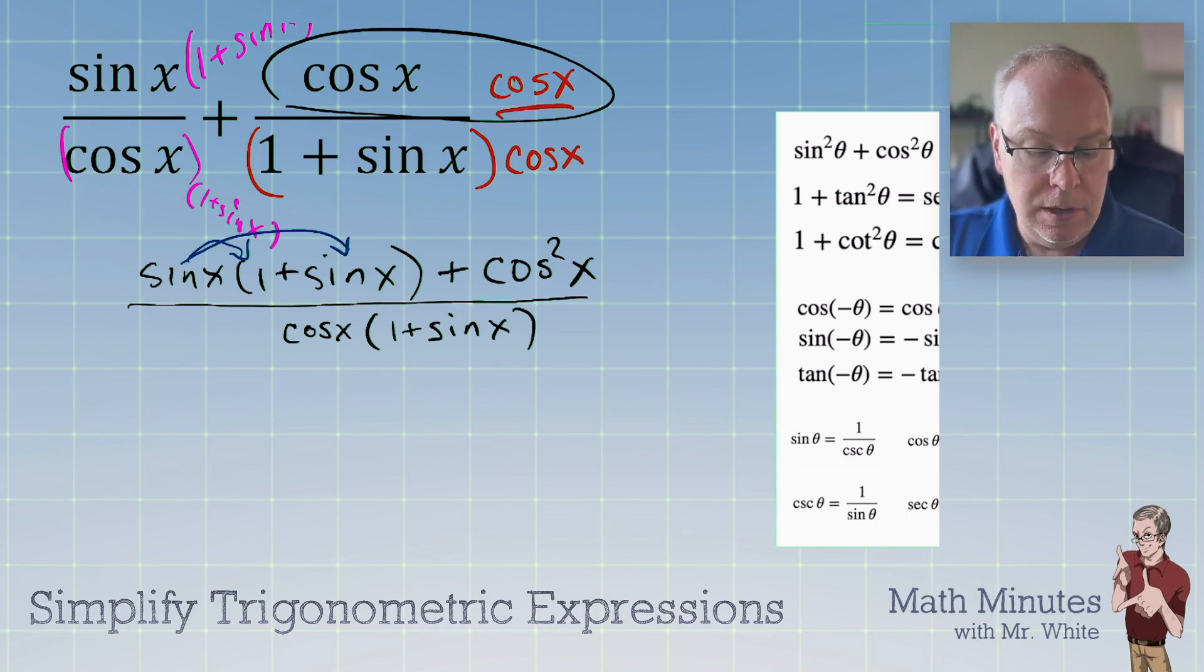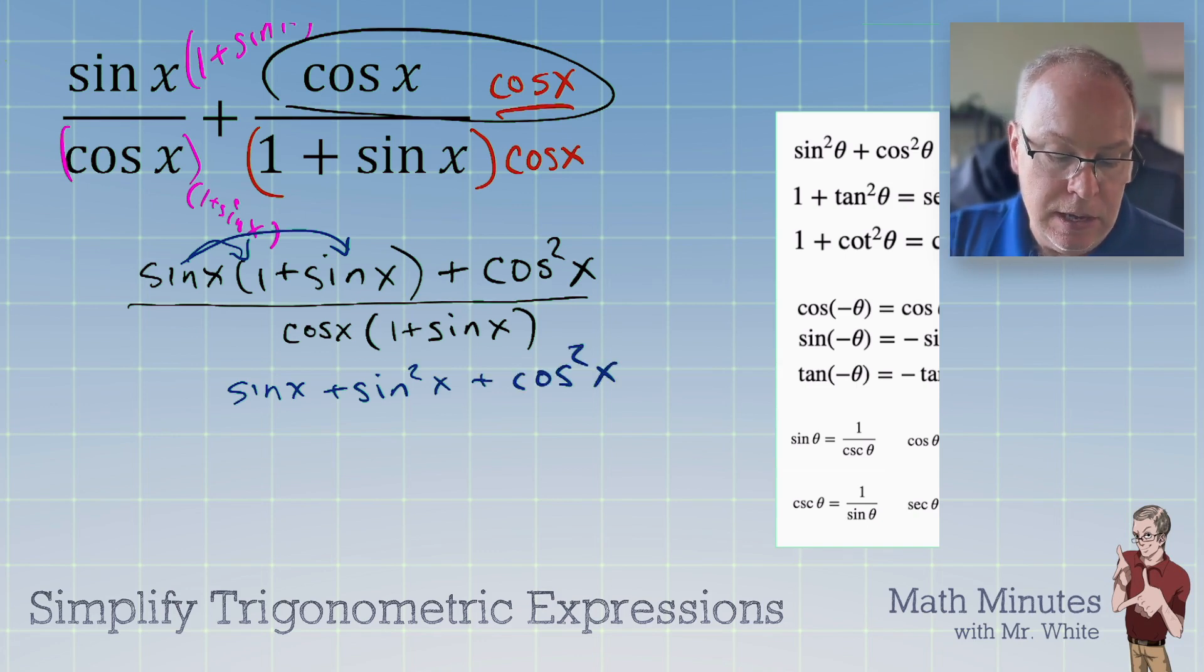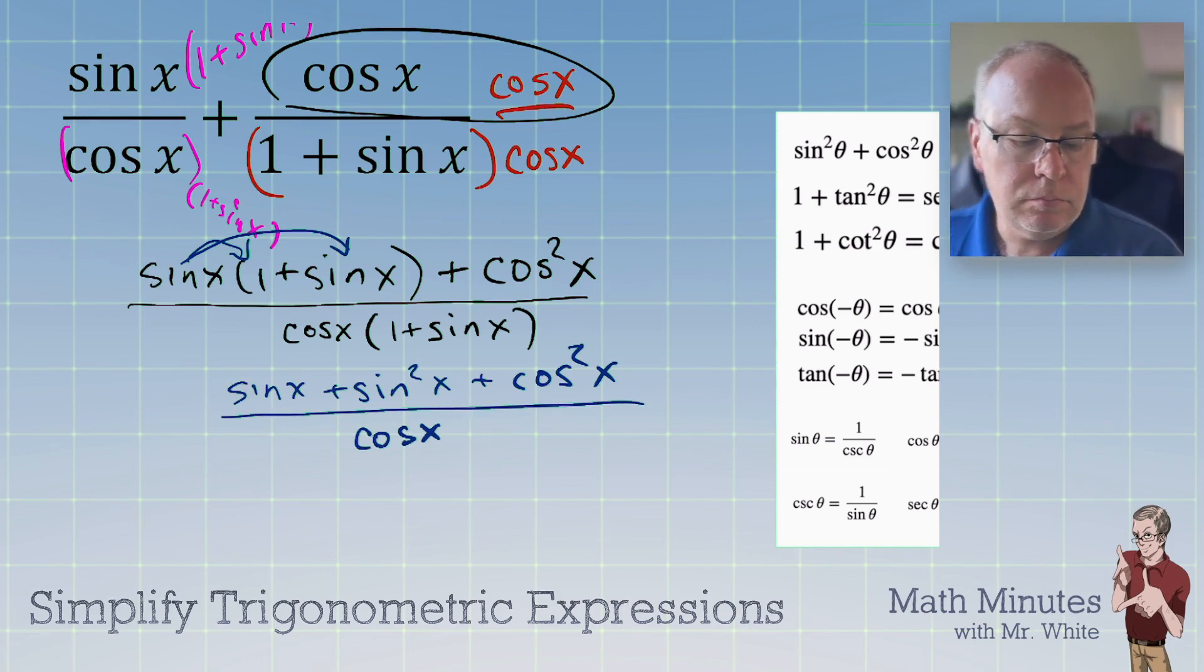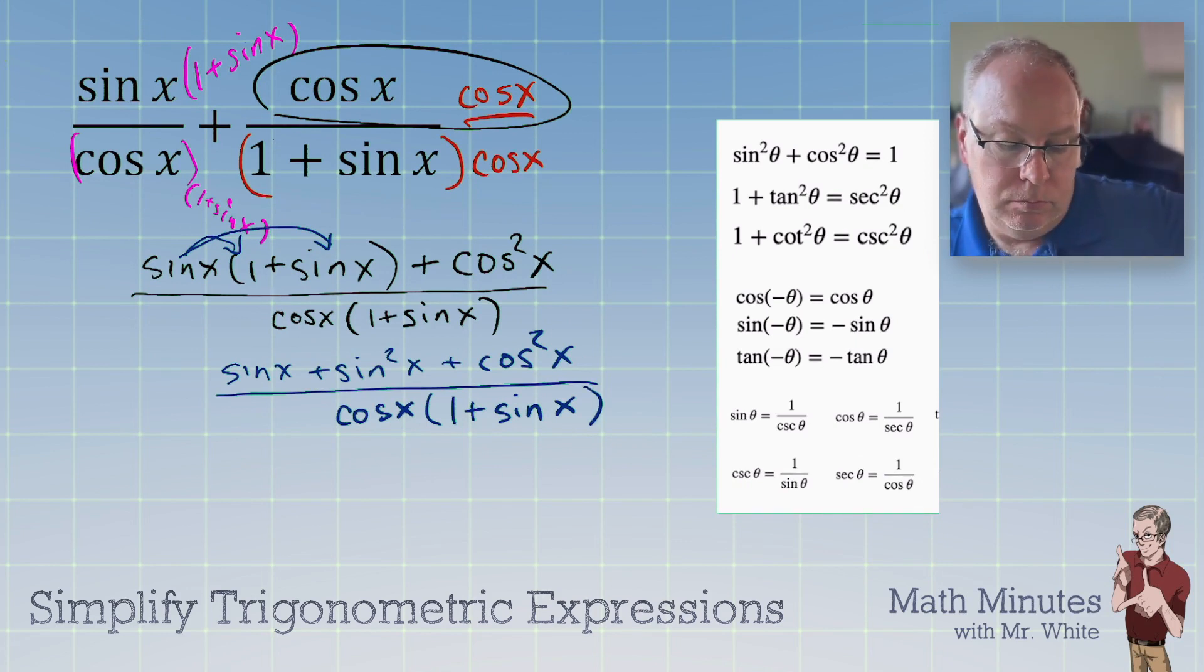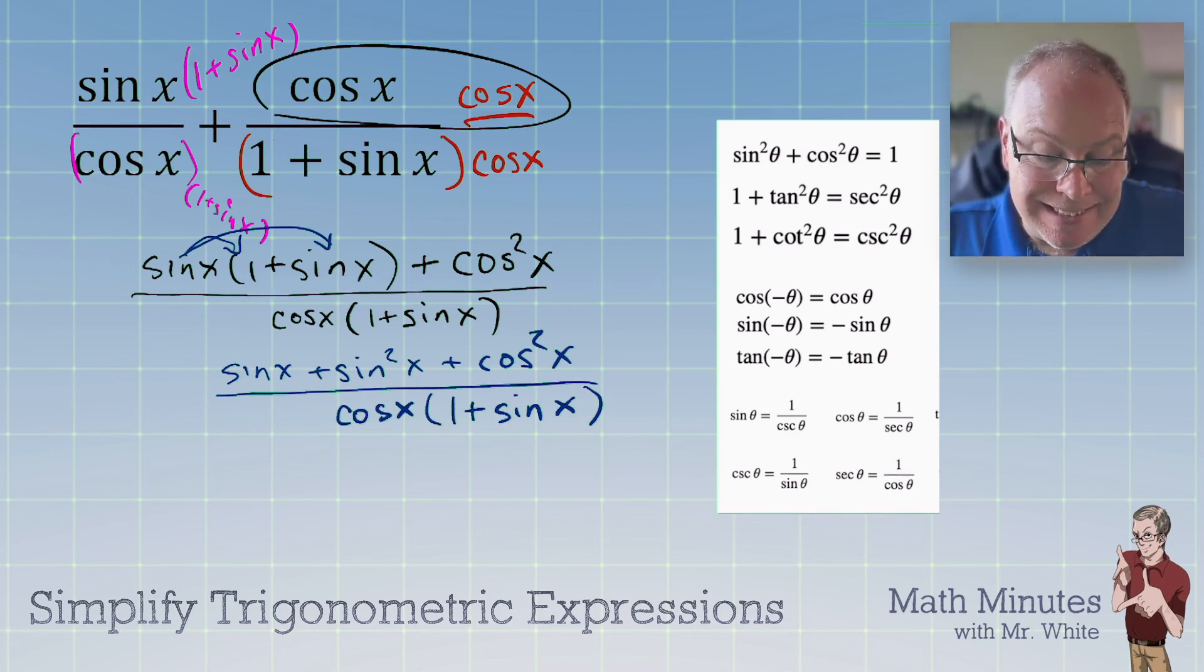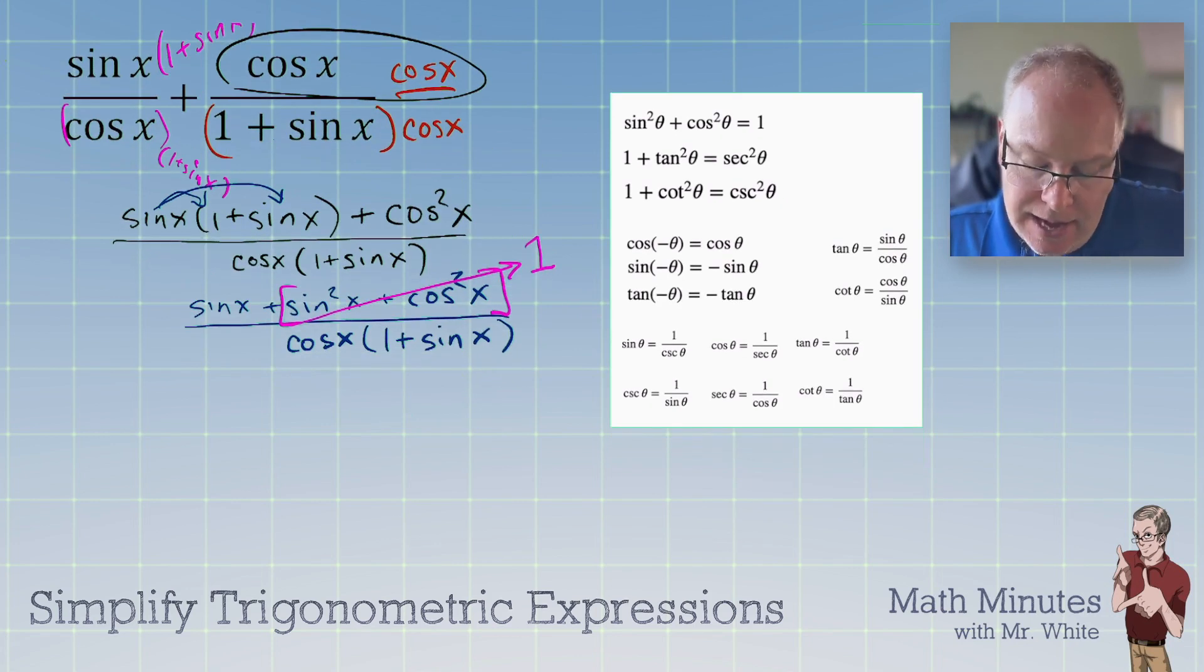Let's do the distributive property. Get rid of these parentheses and just see what happens. So, we get sin x + sin²x. Sometimes this is just an adventure and you just set off on your adventure and you see where it takes you. Plus cos²x all over cos x times the quantity 1 + sin x. Alright, now what are we going to do? What are we going to do here? Well, I see something. You see it? sin²x + cos²x is hiding in there. What does that equal? That equals one. So, on the top, there's the fuchsia again. I keep gravitating back to that, folks. sin x + 1 all over cos x all over 1 + sin x.